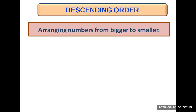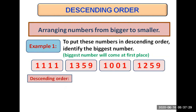Now we will arrange numbers from bigger to smaller — descending order. The biggest number will be put at first place and the smallest number will go at last place. Looking at the example, we are given a few numbers and to put them in descending order, we need to identify the biggest number first. The method will be the same, but instead of looking for the smallest digit, we'll look for the biggest digit. Starting from the thousands place, all numbers have the same digit there.